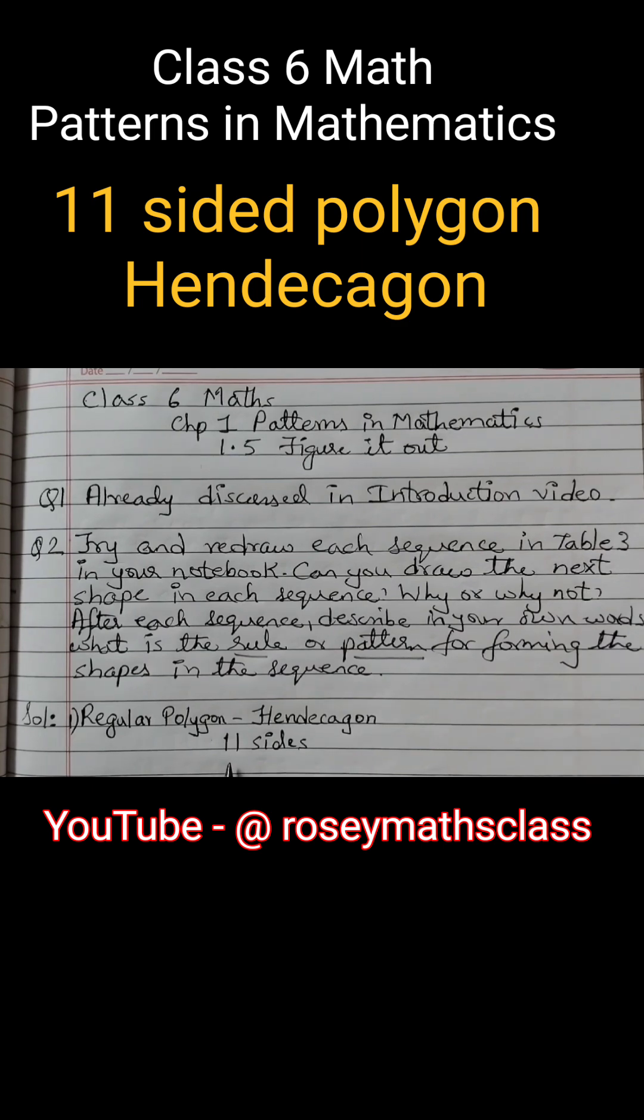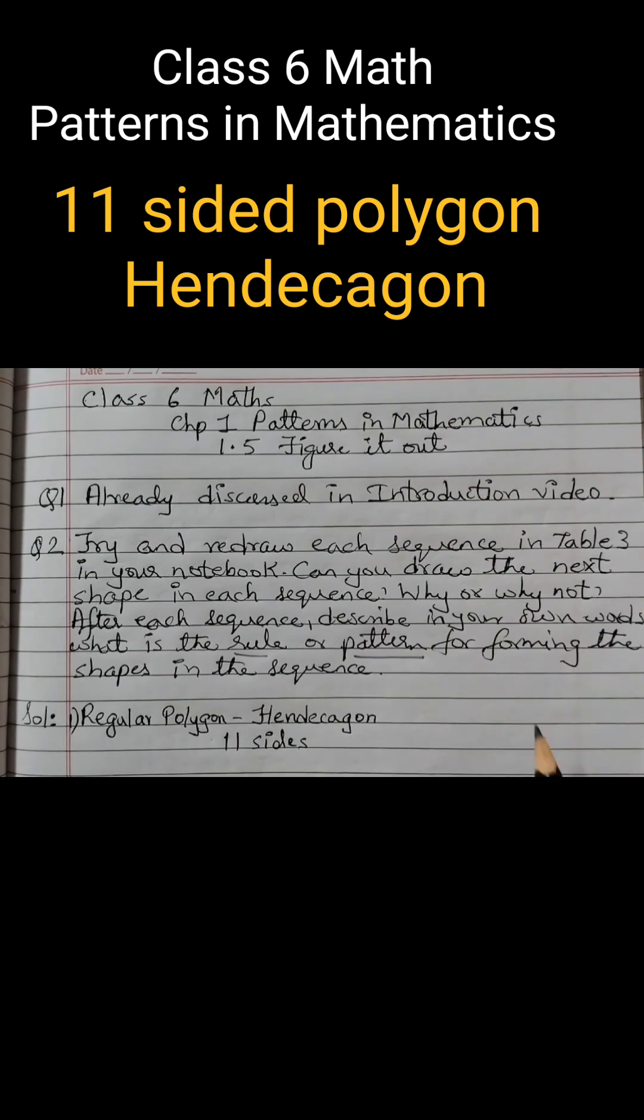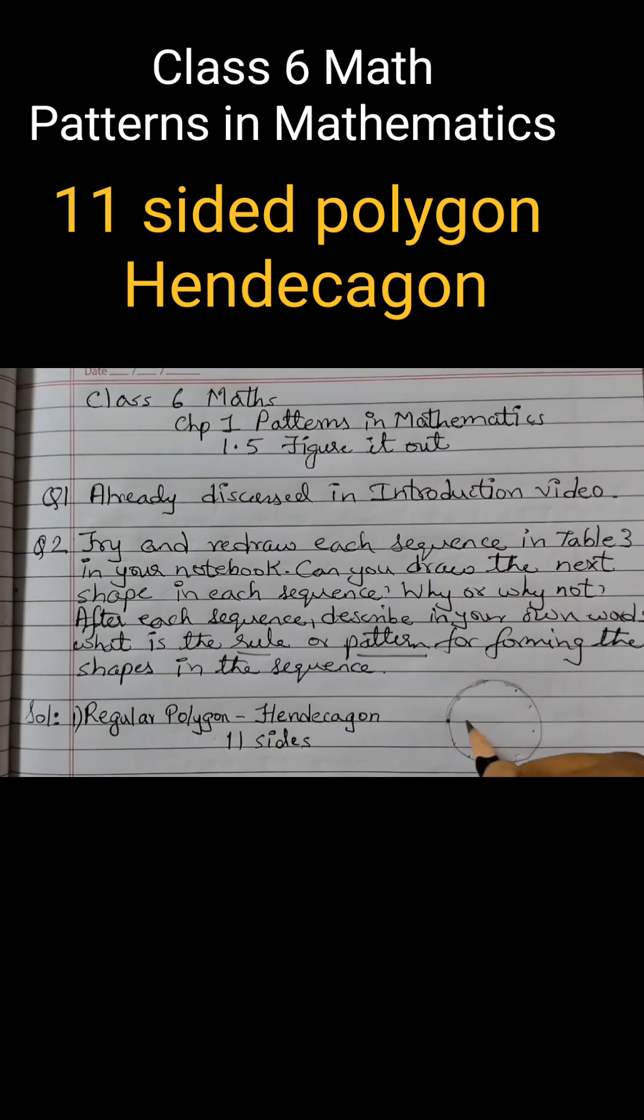So we'll stick to hendecagon. Now how to draw an 11-sided polygon? It becomes difficult for students to draw. So what you can do is you can first draw a rough circle freehand, and then mark 11 points. Try to get them at equal distance.